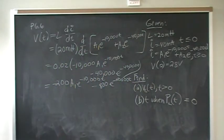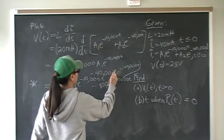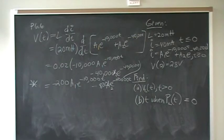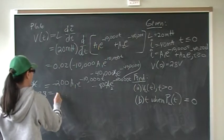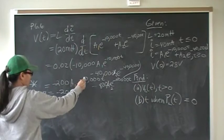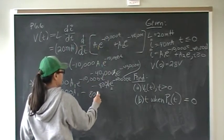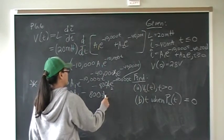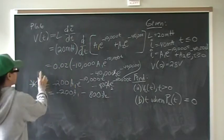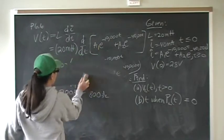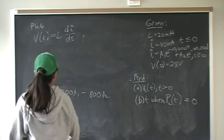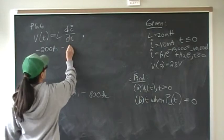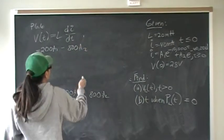Now we don't know A1 and A2, so we have to use our initial conditions. We know that at time 0 we have 28 volts, so 28 equals negative 200·A1 minus 800·A2. That is one equation: negative 200·A1 minus 800·A2 equals 28. We need to find another equation in order to completely solve for the voltage function.